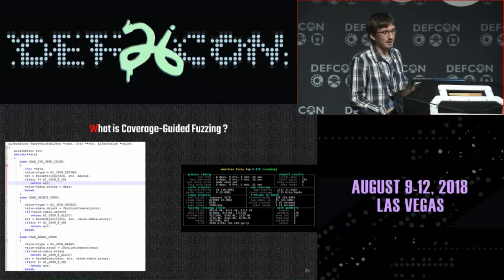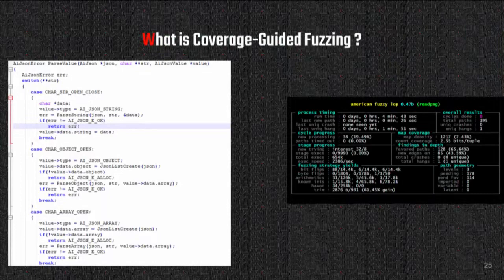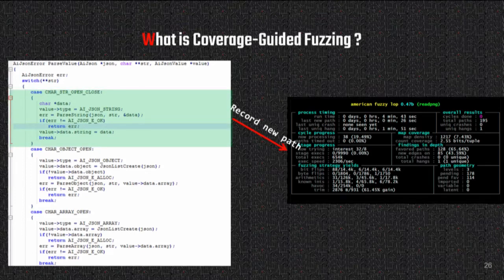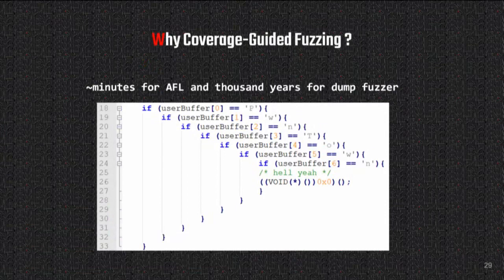What is coverage-guided fuzzing? Many years ago, when fuzzing was dumb and blind, fuzzers considered a program as a black box. It worked for trivial bugs near the surface of the code. People wanted to find more complex bugs deeper in the code, so they decided to instrument the program under test at compilation time and feed coverage back into the fuzzer to improve test case generation. The best example of such a fuzzer is American Fuzzy Lop, or AFL.